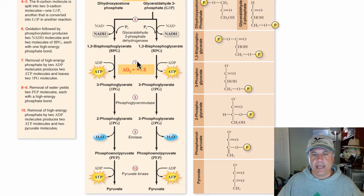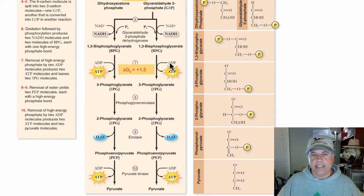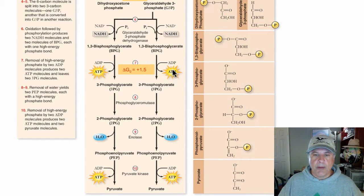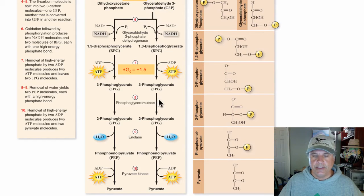In step 7, we take one of the phosphates that was on 1,3-bisphosphoglycerate, remove it, and add it to ADP to produce ATP. That's ATP being produced! And remember, there are now two ATPs being produced because there are two molecules of glyceraldehyde 3-phosphate that have entered the energy-yielding phase.